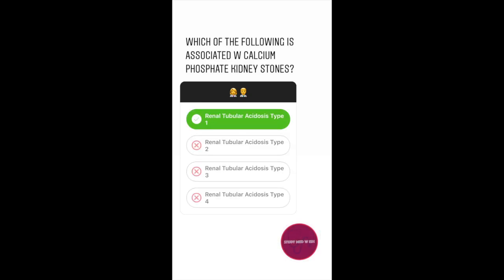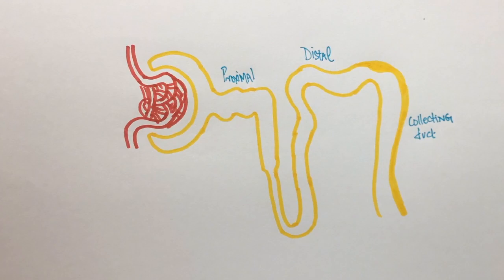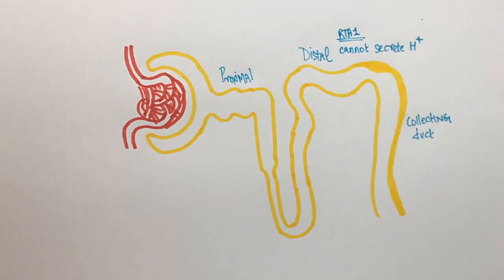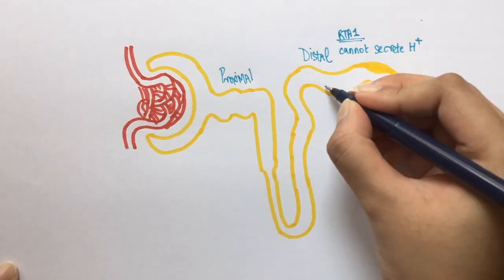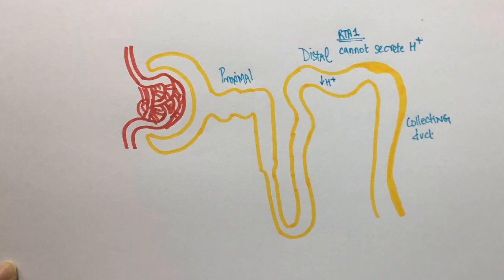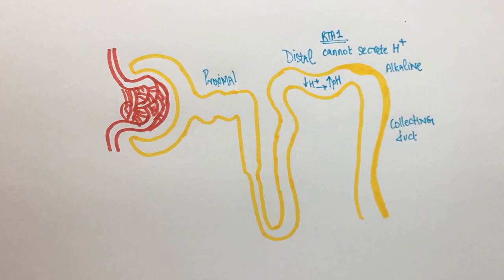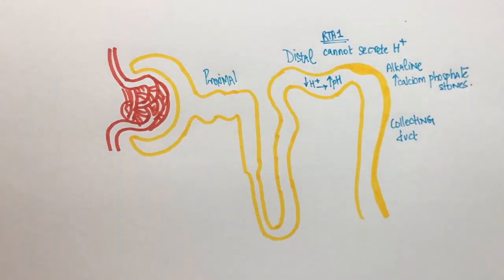The answer to this question is RTA type 1. The main issue with this condition is the inability of the distal tubules to secrete hydrogen ions. Due to this, hydrogen ions build up in the body and cause acidosis. Due to the lack of hydrogen ions in the urine, the pH increases. Alkaline urine predisposes to the formation of calcium phosphate kidney stones.